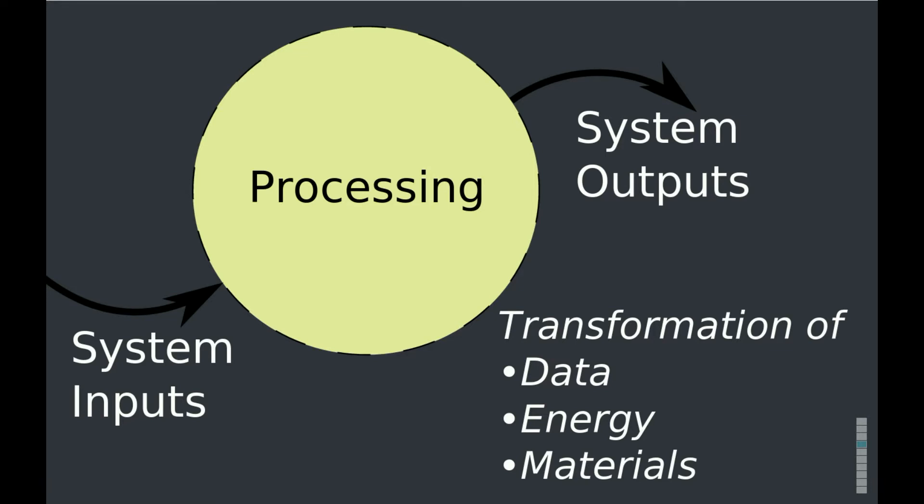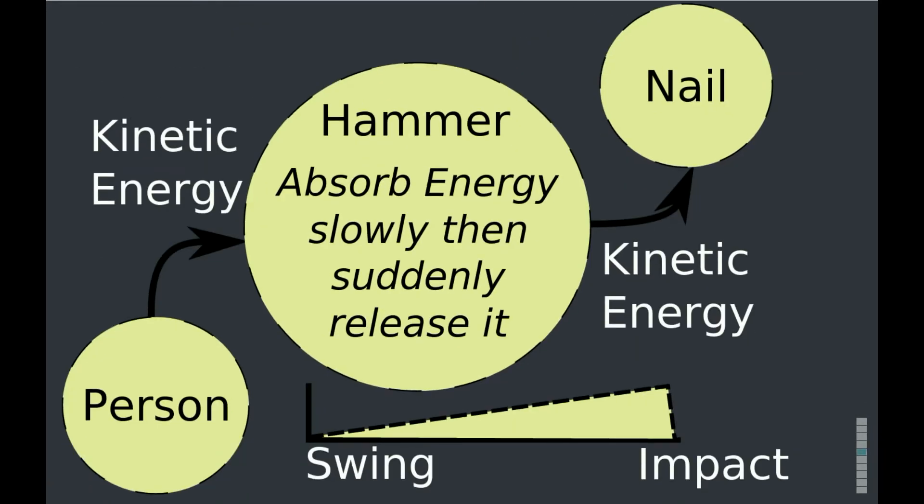What kind of transformation does a hammer do? Its inputs is a person's force. A person puts in kinetic energy. The hammer gives kinetic energy to the nail and it makes the nail go into the hole.